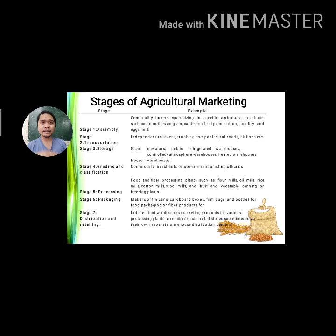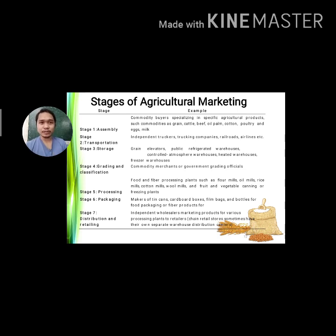Stage three is storage. After transporting the product from the farm, it is stored. Depending on the product, storage facilities include grain elevators, public refrigerated warehouses, controlled atmosphere warehouses, heated warehouses, and freezer warehouses.